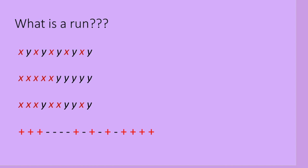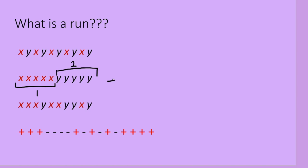What is a RUN anyway? A RUN is a succession of identical letters followed by different letters or no letter at all. For example, XXXXXX would be one RUN and all of the Y's would be the second RUN. So in this example, the number of RUNS is 2.